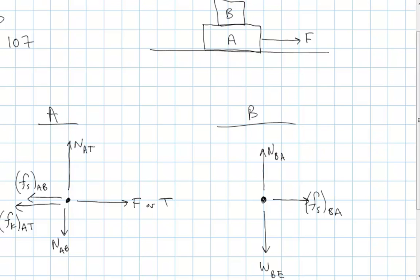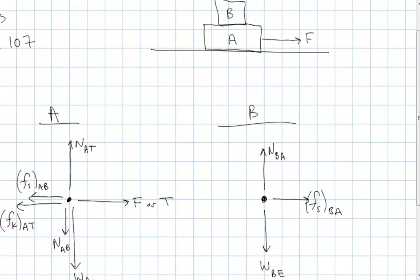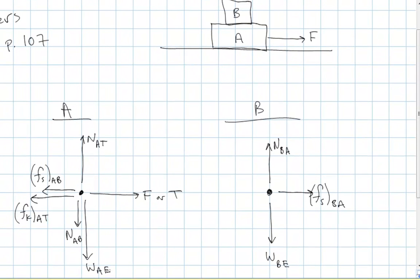Those two blocks are interacting through that static friction force. That's everything that's touching block A. What can reach in from a distance? The only thing that can reach in from a distance right now is gravity — the weight of block A from the Earth. So let's take a look: they've got the normal force on A by the table, the weight on A from the Earth, kinetic friction between A and the table, the tension in the rope, and the normal force on A from B, but they left out one force — the static friction force between blocks A and B.